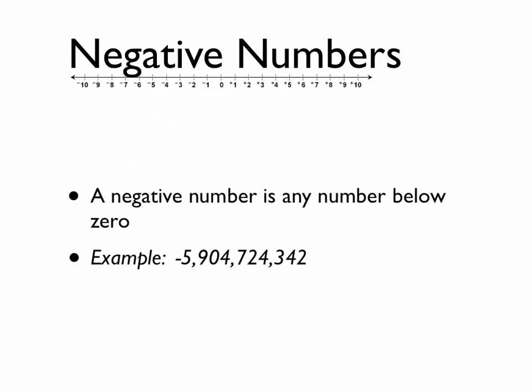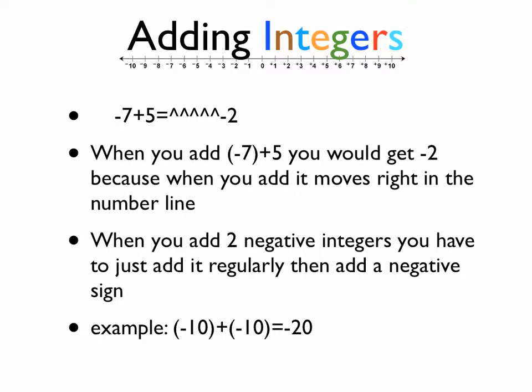A negative number is any number below 0. When you add negative 7 plus 5, you would get negative 2, because when you add it, it moves right in the number line.